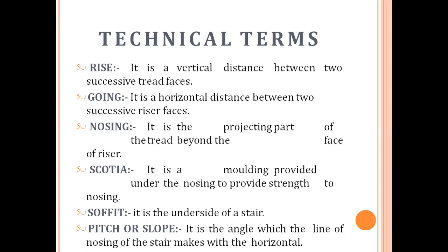Going is the horizontal distance. Nosing is the projecting part of the tread beyond the face of the riser. Scotia is a moulding provided under the nosing to provide strength to the nosing. Soffit is the underside, or bottom portion, of the stair. Pitch or slope is the angle which is provided in the stairs; it varies from 20 degrees to 55 degrees.